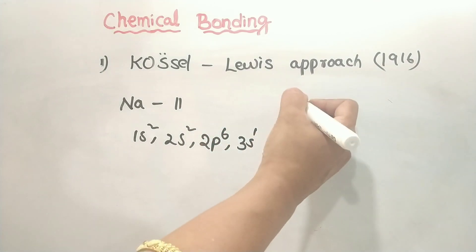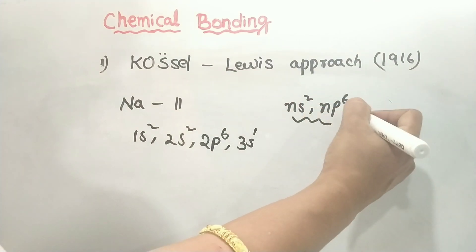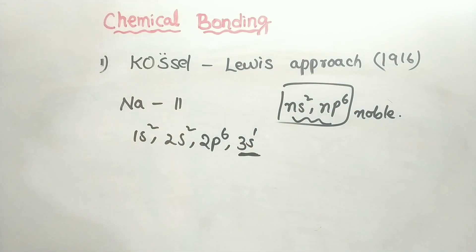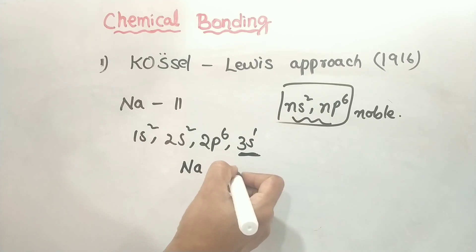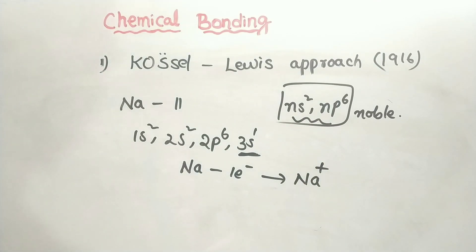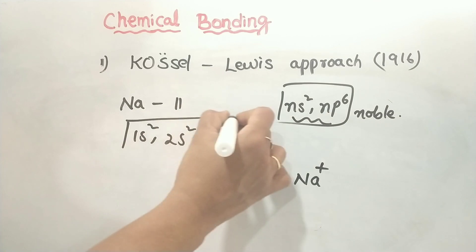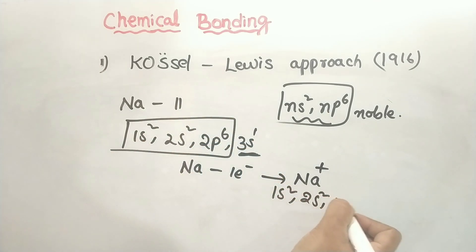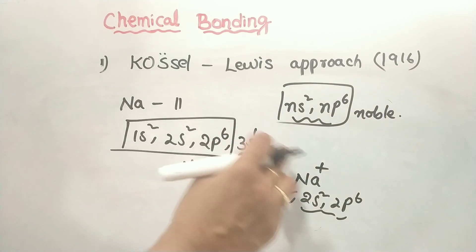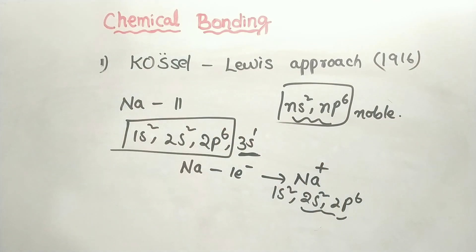This is the octet rule. For example, sodium loses 1 electron. Na+ has the configuration 1s2, 2s2, 2p6 — the same as neon, a noble gas. Noble gases are the most stable elements. For stability, an atom will always try to gain or lose electrons to achieve a noble gas configuration. When sodium loses an electron, it is formed as a cation.